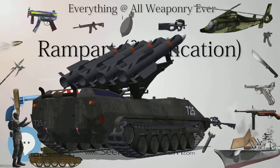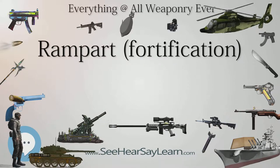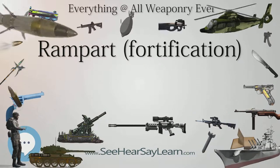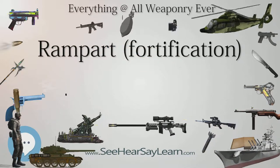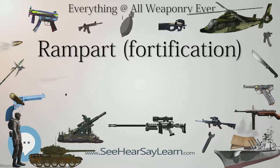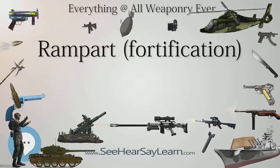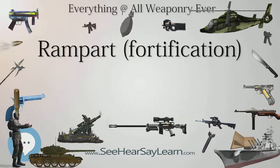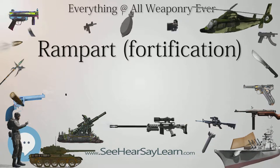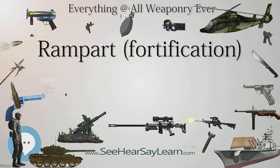Chemin de ronde, or wall walk: a pathway along the top of the rampart but behind the parapet, which served as a fighting platform and a means of communication with other parts of the fortification. Machicolation: an overhanging projection supported by corbels, the floor of which was pierced with openings so that missiles and hot liquids could be thrown down on attackers.